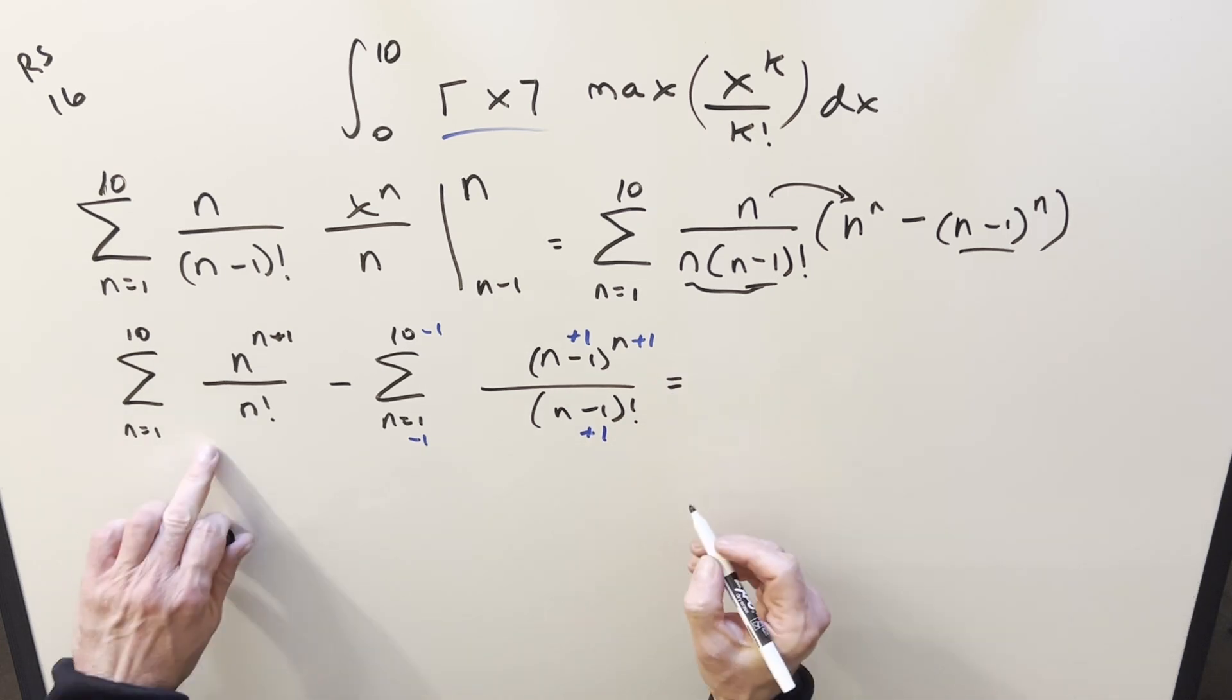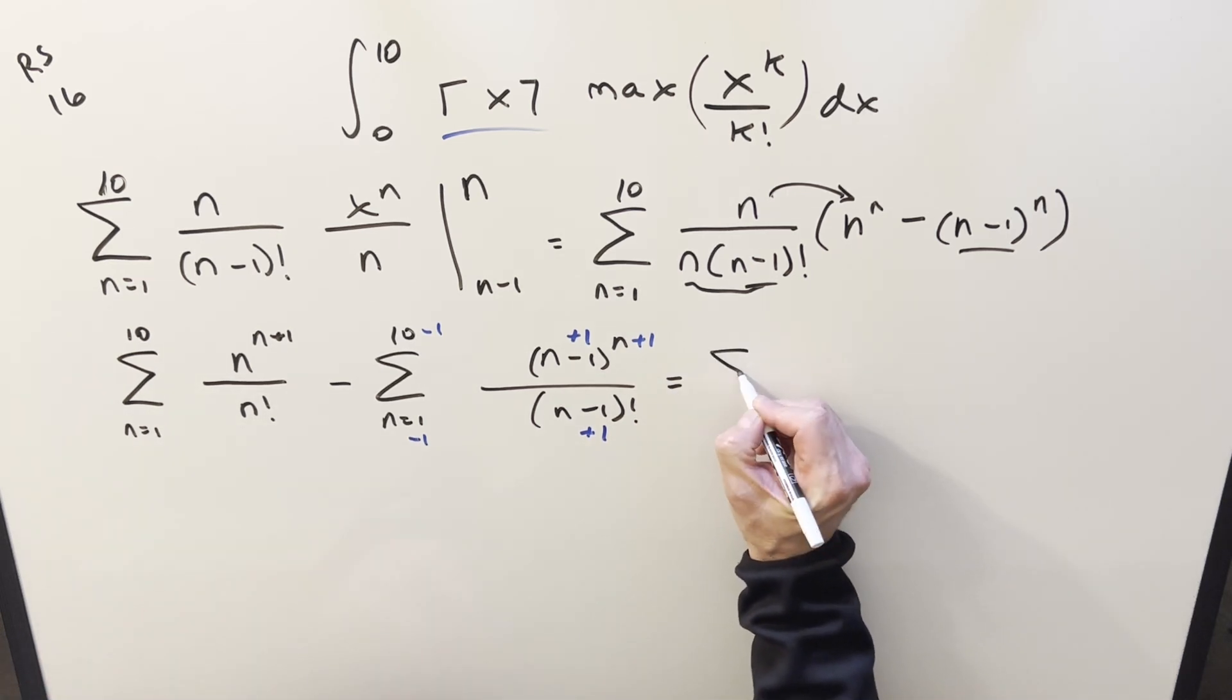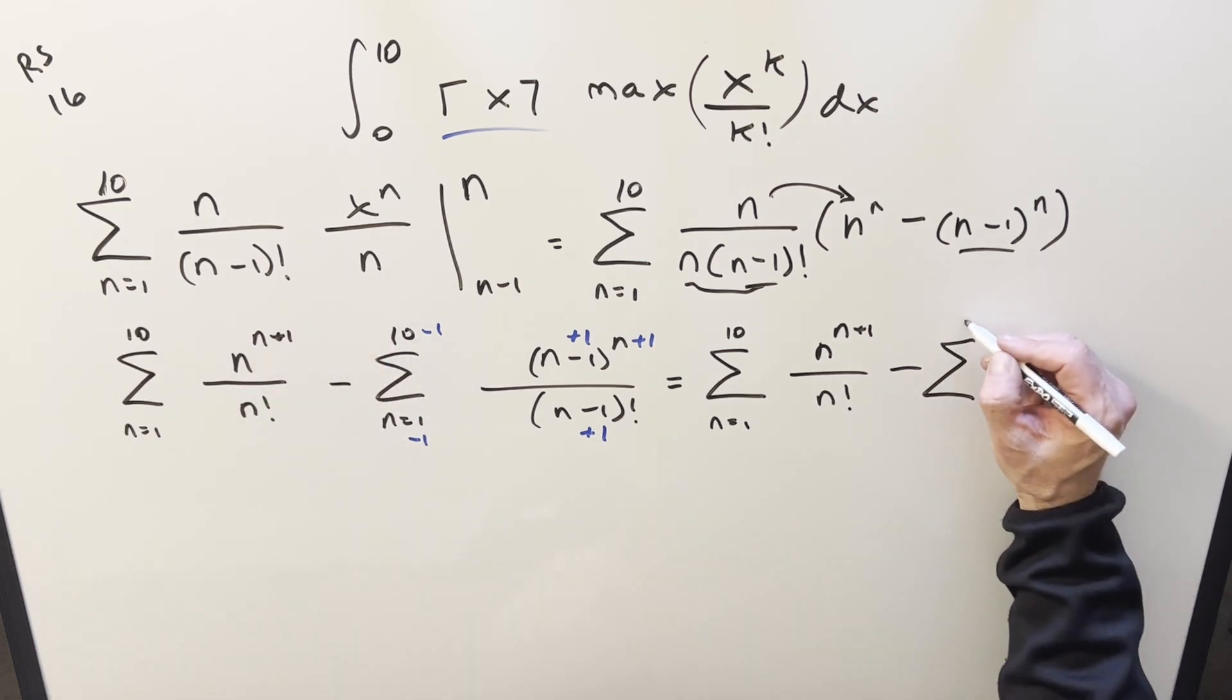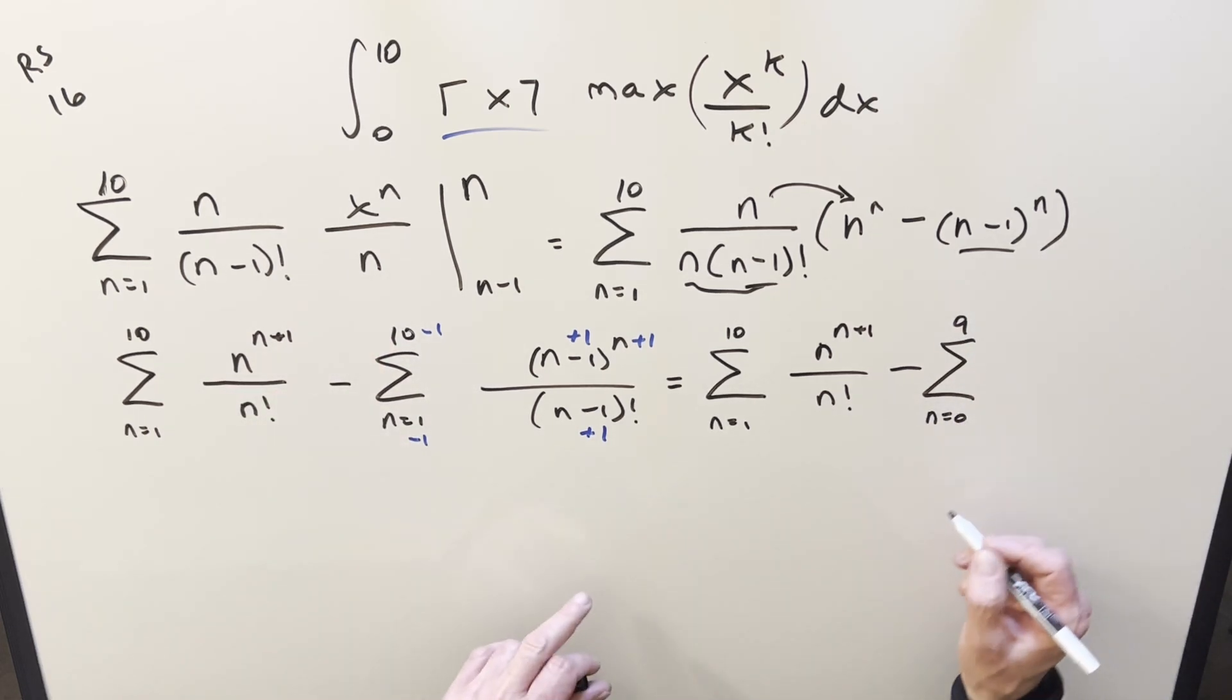So doing this, we'll keep this one exactly the same. And then updating our second sum. Now the upper bound is a 9. This becomes n equals 0.